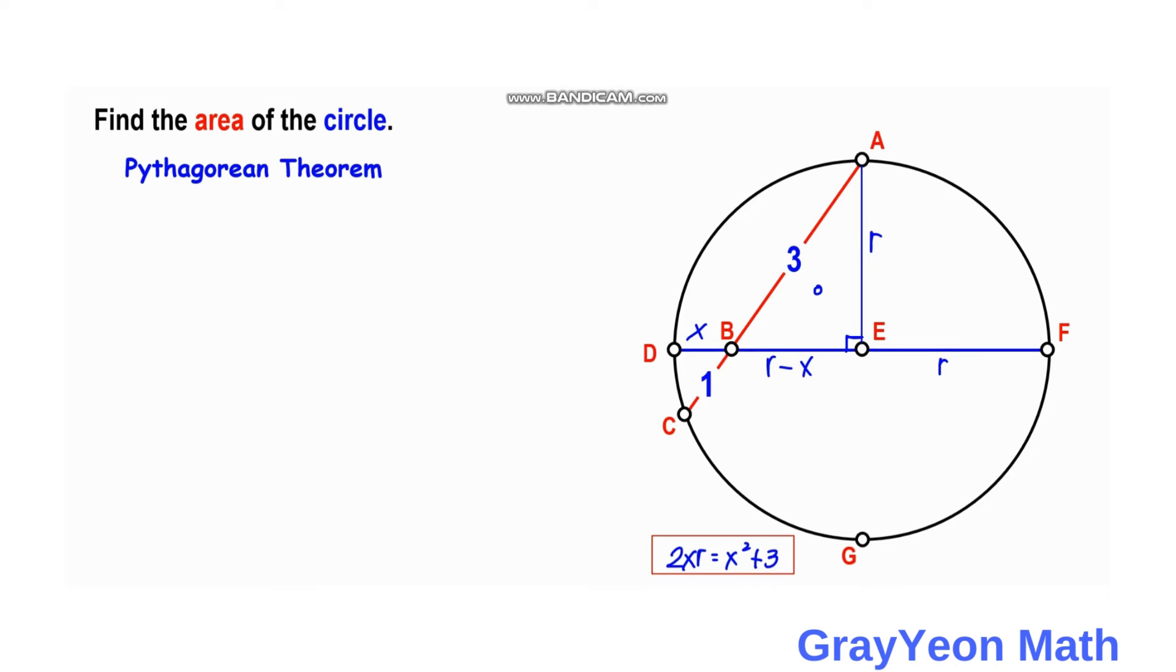By the Pythagorean theorem, we have (R minus X) squared plus 3 squared equals R squared. Squaring the binomial, this becomes R squared minus 2XR plus X squared plus 9 equals R squared.